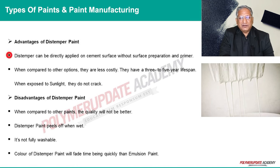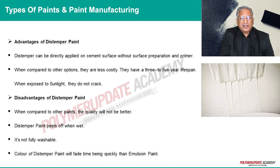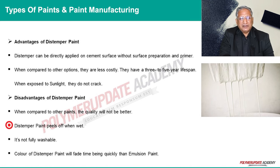Advantages of distemper paint: it can be directly applied on cement surfaces without surface preparation or primer, is less expensive compared to other alternatives, is durable for three to five years, and does not dry out or crack in sunlight. Disadvantages: the quality is not as great as other paints, distemper paint peels off when wet, is not fully washable, and its color fades faster than emulsion paint.